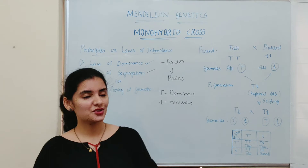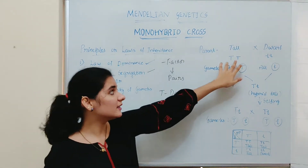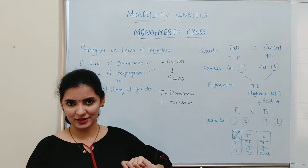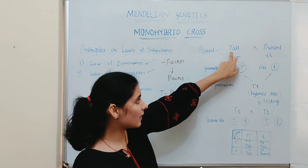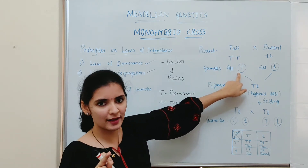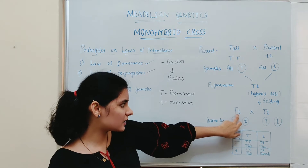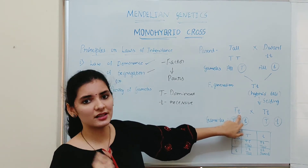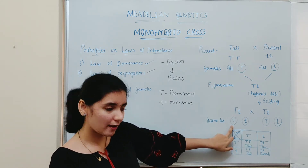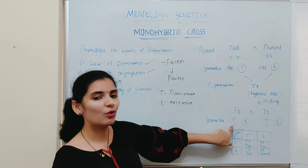According to the law of segregation, though the parent has two discrete factors, during gamete formation these factors will segregate or separate and each gamete will receive only one factor. As you can see here, the tall plant has two factors — capital T and capital T — but during gamete formation it receives only one factor, capital T. Again, the hybrid plant having two factors — capital T and small t — has two dissimilar factors. Though it has two dissimilar factors, during gamete formation each gamete receives only one factor. The two factors will segregate or separate, and each gamete will receive only one factor.